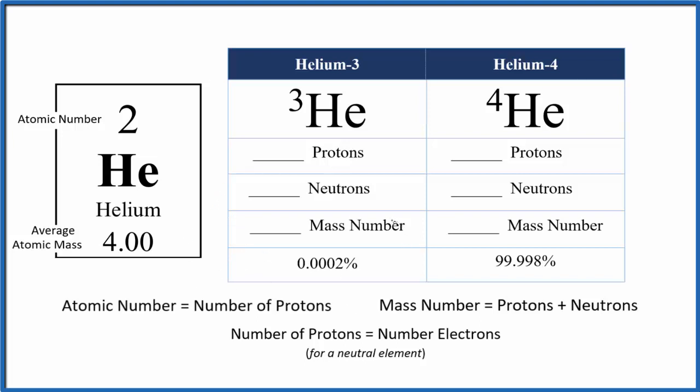The big thing that differs when we're talking about isotopes: neutrons will be different, but protons and electrons will be the same. So when we look at helium, let's look at helium 3 here.